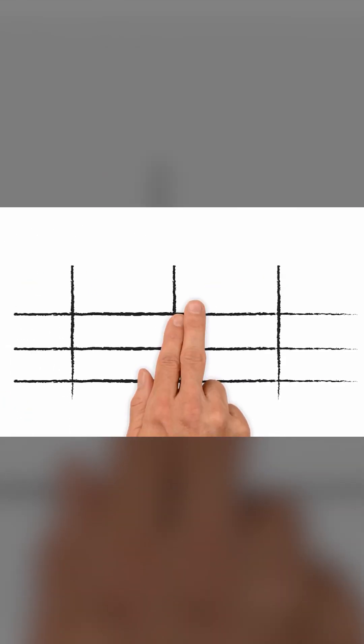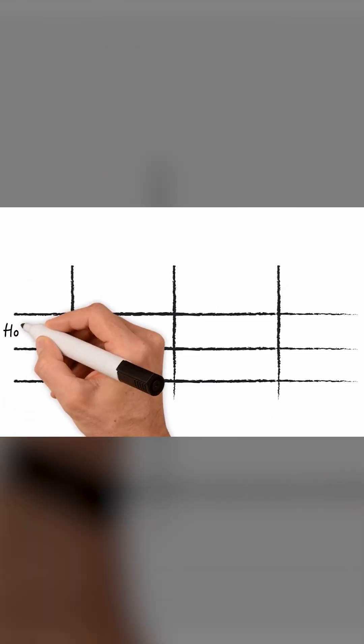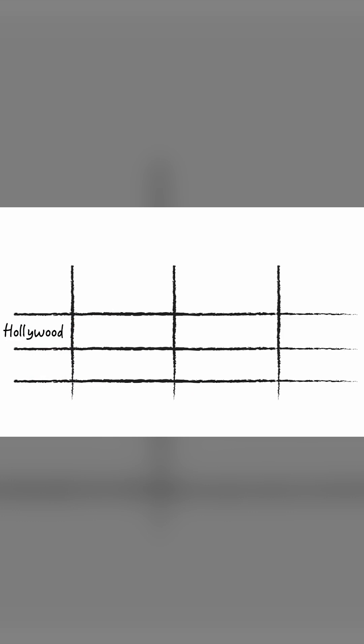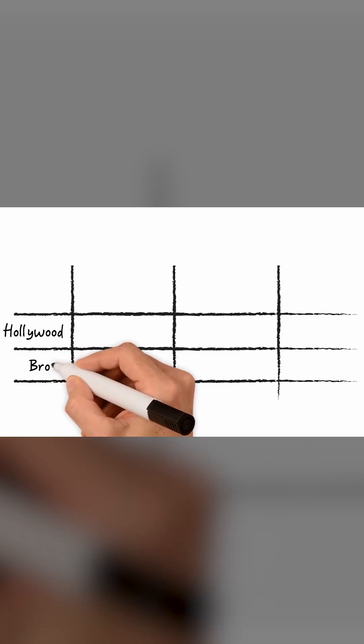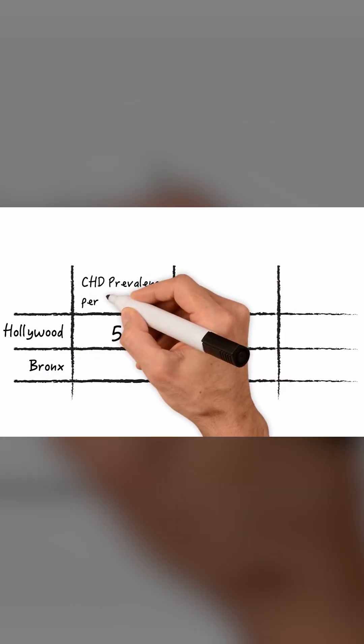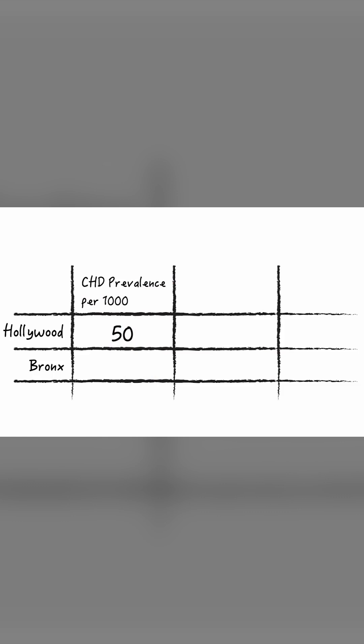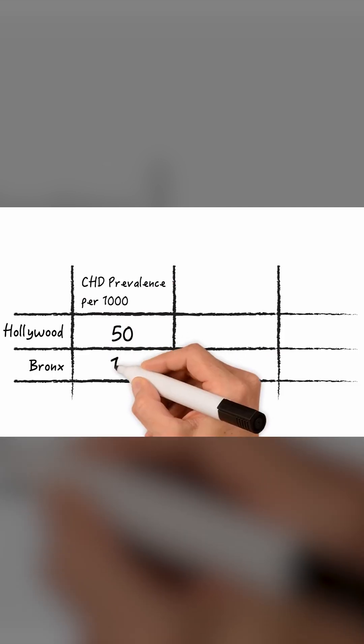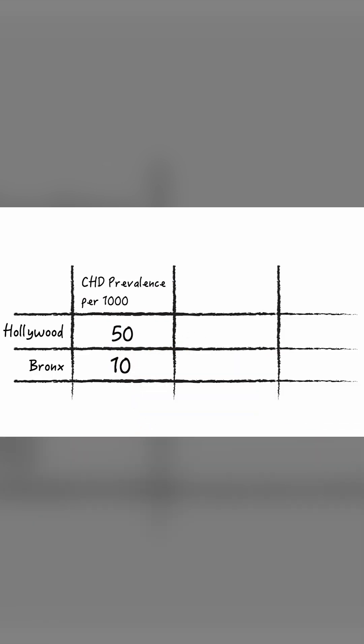Let's use an example of coronary heart disease in two different populations. One is the population of Hollywood, the other one is the population of the Bronx. Our fictitious Hollywood has a prevalence of 50 cases per 1,000 population. The Bronx, on the other hand, has a prevalence of 10 per 1,000.